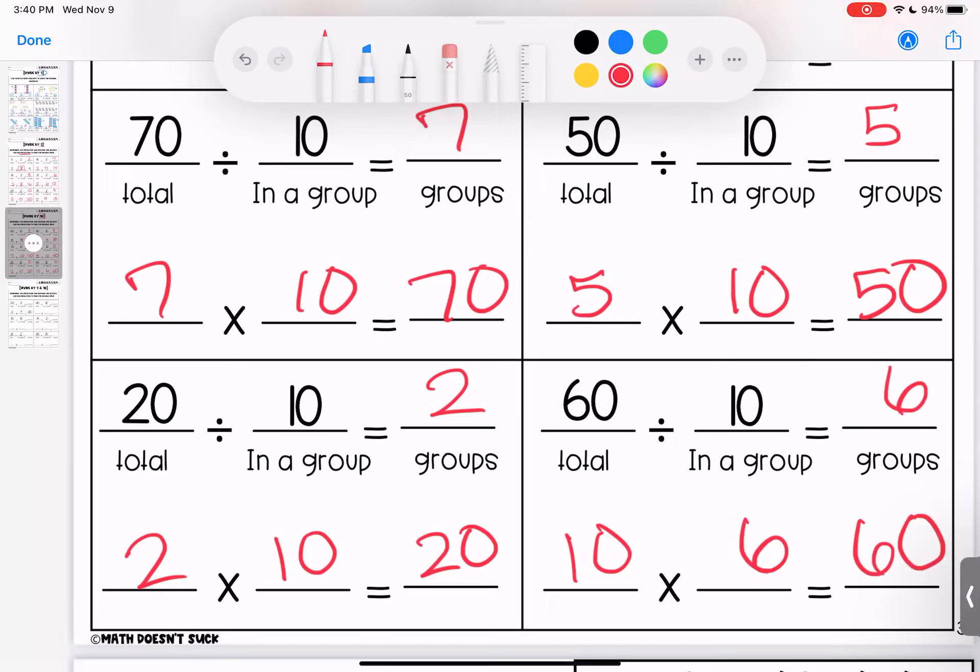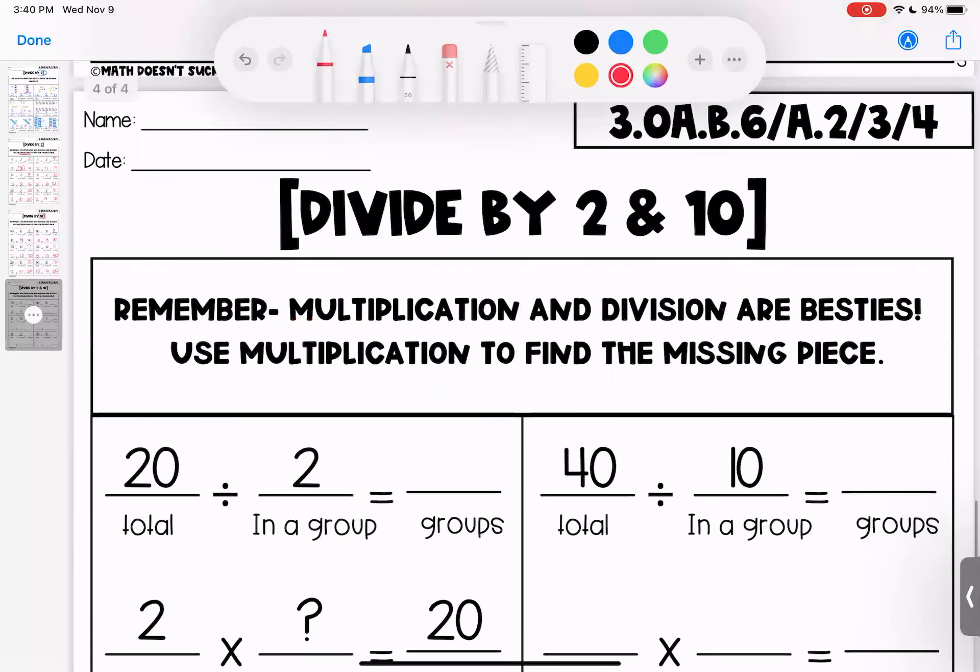Sixty divided by ten is six because ten times six is sixty. That's the end of this page. If you have any questions, bring them to class. If you're ready for our final page, hang tight because here they go.